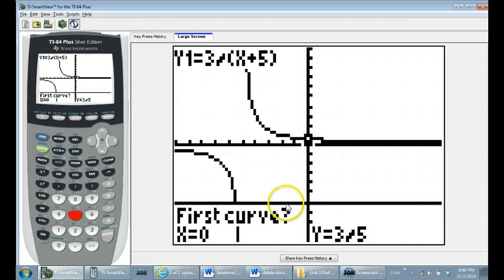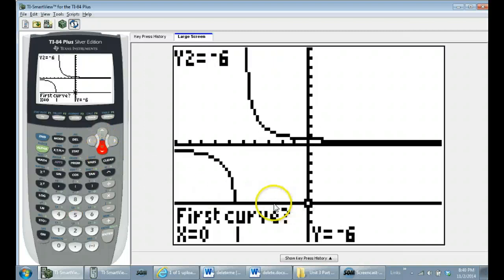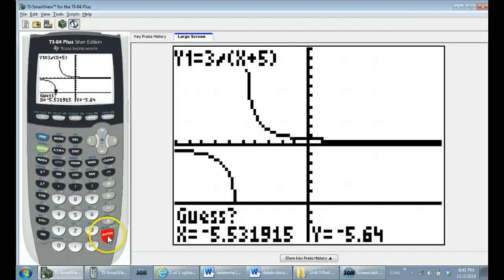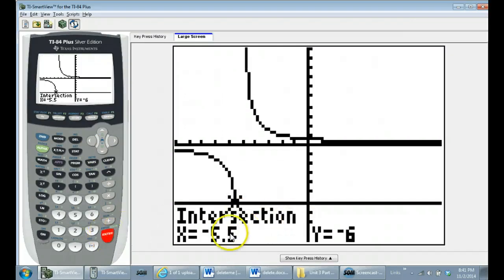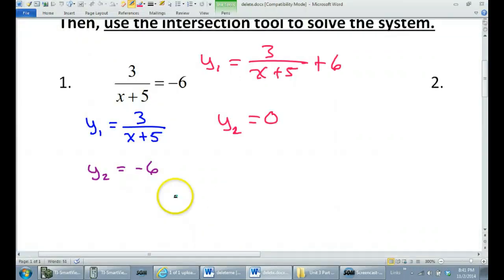So if we hit second trace to get to the calculate menu, you see that option number 5 is for intersections. So I can just hit 5. I find it helpful to jump to the horizontal line. So you can hit the up key or the down key. So that way, I can just slide my way over near the intersection point very easily. And I'm just going to hit enter three times. And here's the intersection. I don't need to worry about the y value. Of course, that's negative 6. It's the x value, which is the solution. So negative 5.5. And that's how you do it. So the solution to this would be x equals negative 5.5. Yes, it's just that easy.